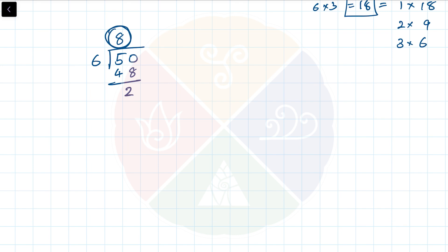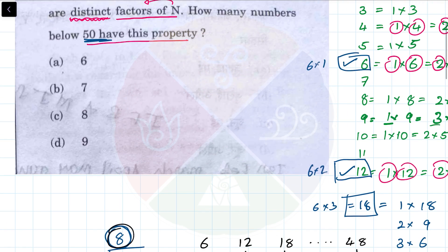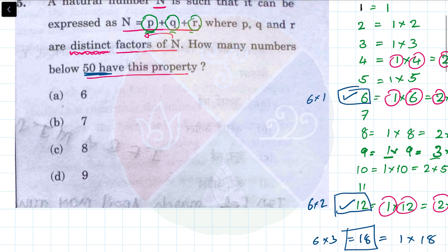8 numbers below 50 will be divisible by 6. The numbers will be 6, 12, 18, and keeps on going till 48. This is the first multiple of 6, this is the second multiple, this is the third multiple. Just like that, there are 8 multiples. So there are 8 numbers from 1 to 50.